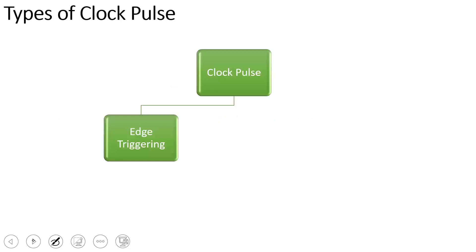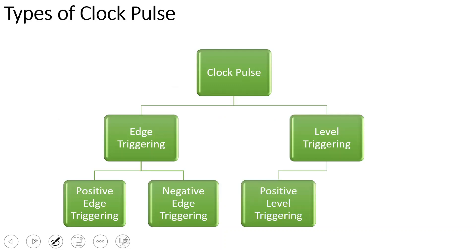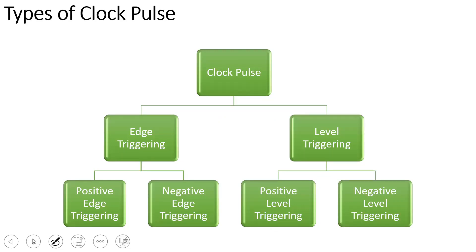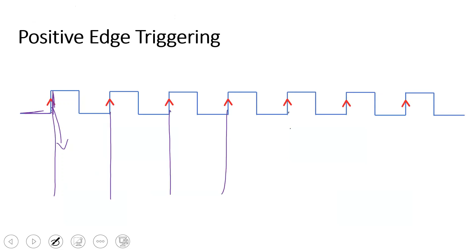Types of clock pulse: based on the triggering method, there are two types — edge triggering and level triggering. Edge triggering has two sub-types: positive edge triggering and negative edge triggering. If you look at the edge, it is the transition point between low and high. Positive edge triggering occurs at the leading edge — the low-to-high transition. At that particular time, the flip-flop is triggered.